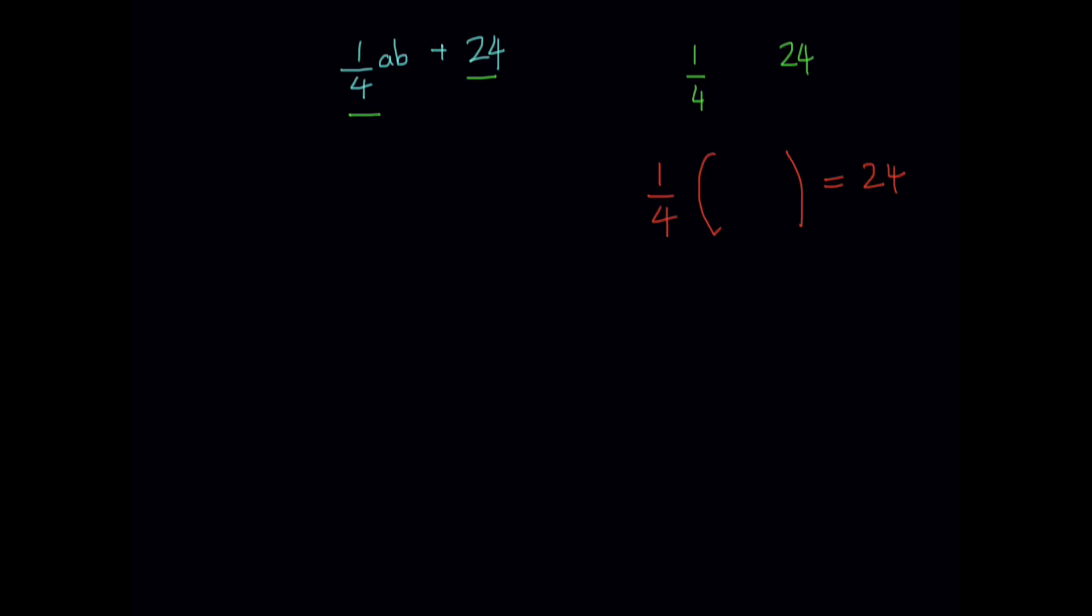Now if I call that value some value z, I need a value such that 1/4 times that z gives me 24. In order to find z, I have to get that by itself on this side of the equation. I have to get that alone, so I have to get rid of this 1/4. I can do that by multiplying both sides of the equation by 4. So 4 times 1/4 is just 1, so we get rid of this. And we see that this value of z equals 24 times 4, which gives me 96.